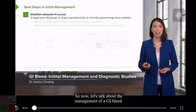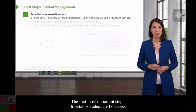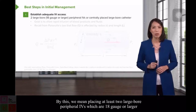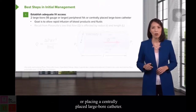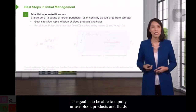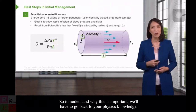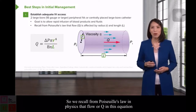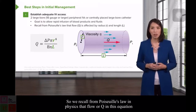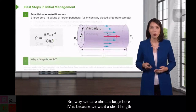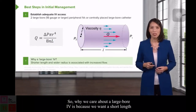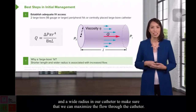Now let's talk about the management of a GI bleed. The first and most important step is to establish adequate IV access — placing at least two large-bore peripheral IVs, which are 18 gauge or larger, or placing a centrally placed large-bore catheter. The goal is to rapidly infuse blood products and fluids. Recall from Hagen-Poiseuille's law that flow is affected exponentially by the radius and inversely by the length, which is why we want a short length and wide radius in our catheter to maximize flow.